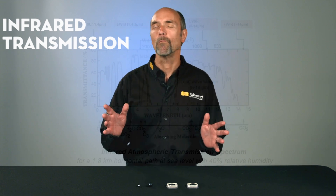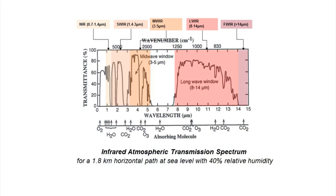First, let's look at the infrared transmission spectrum. When we talk about the infrared, we're looking mainly at wavelengths from 800 nanometers to 14, maybe 15 microns. There's a gap in between, between five and a half and seven and a half microns, because infrared just does not transmit well in the atmosphere for those wavelengths.